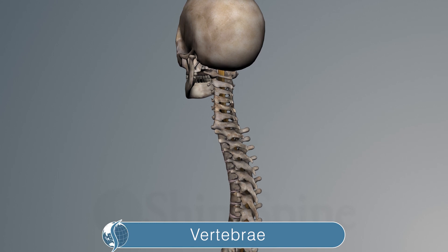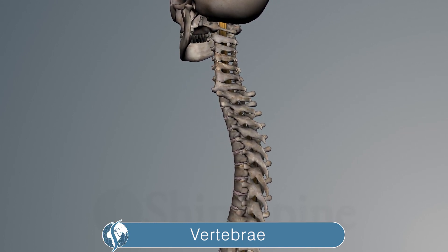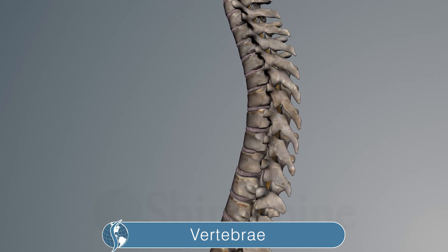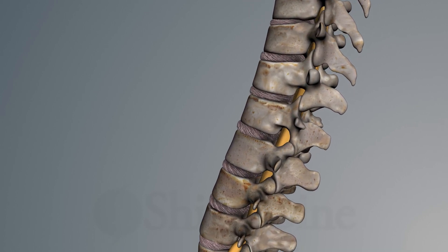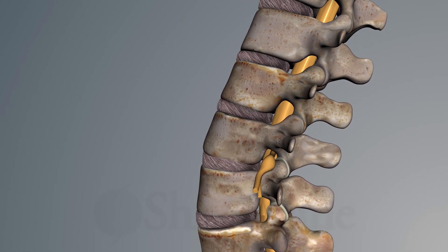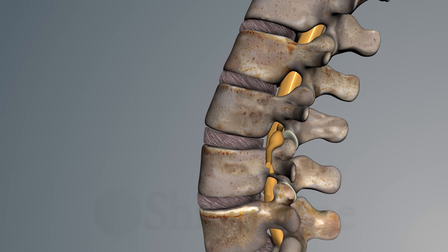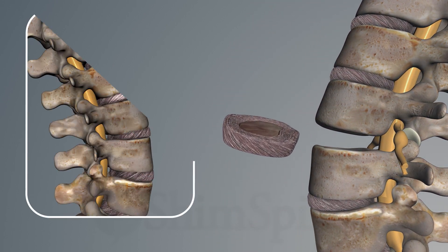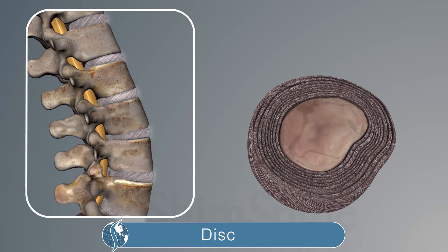But these protective bones, the skull and the vertebrae, need to also move. That's why the spine is more than just bones encasing the spinal cord nerves. It also is composed of a softer component called the disc.